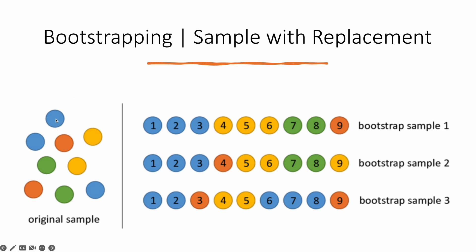So we randomly select a ball — let's say it's blue for the first sample, mark it as observation one. We pick another ball; by chance it's blue again, mark it as two and put it back. Similarly, we complete our first bootstrap sample of nine observations from the original sample. What's important is we are sampling with replacement, so we may get no blue balls, or we may get two or more blue balls, because it's randomly selected with replacement.